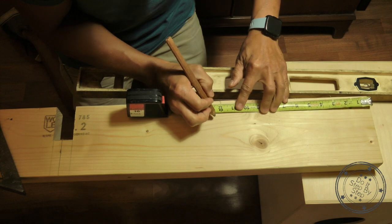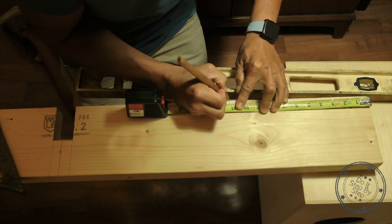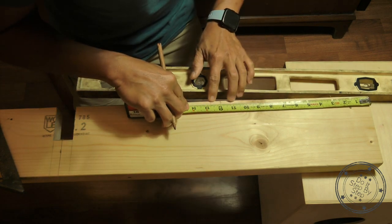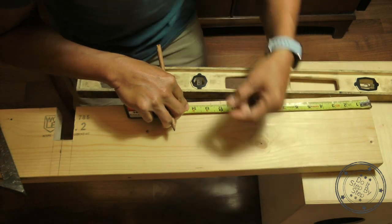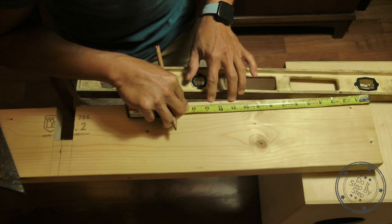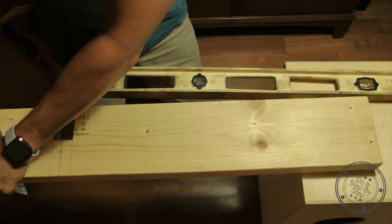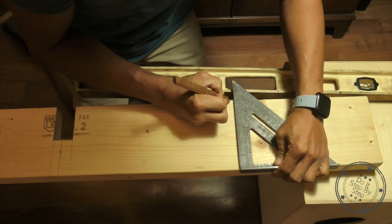And then you measure three quarters of an inch on each side, because that equals one and a half inches. This piece of lumber is one and a half inches thick, and you're going to make your half lap joint right here. So three quarter inches on each side will give you one and a half inches. And draw your lines.